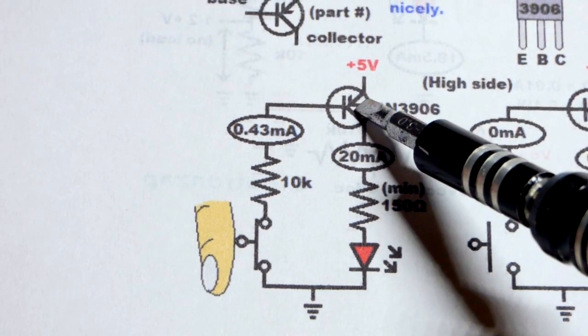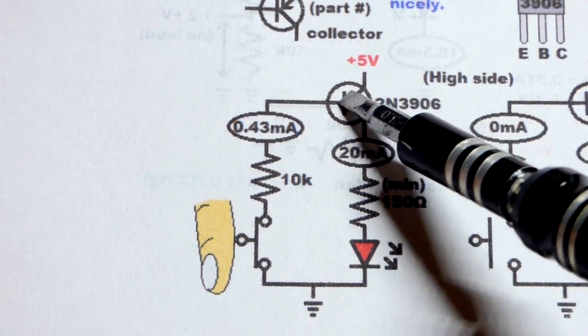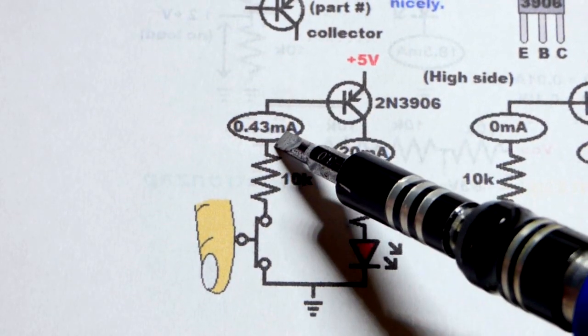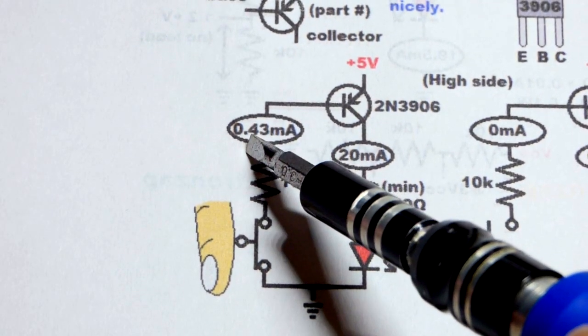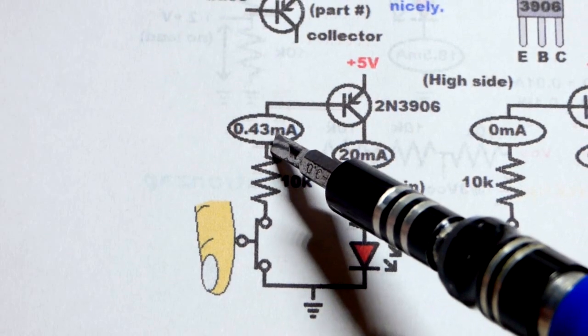We got a 10,000 ohm resistor setting the current, 5 volts minus about 0.7 volts drop from emitter to base. That will put 4.3 volts across a 10,000 ohm resistor. Ultimately, we'll get about 0.43 milliamps of current.